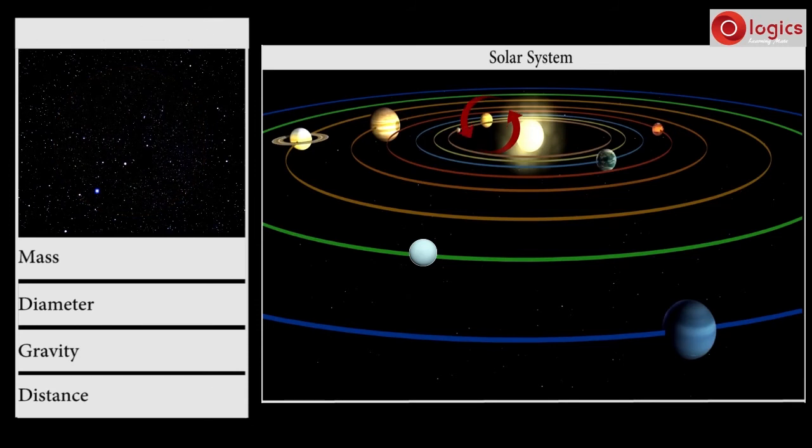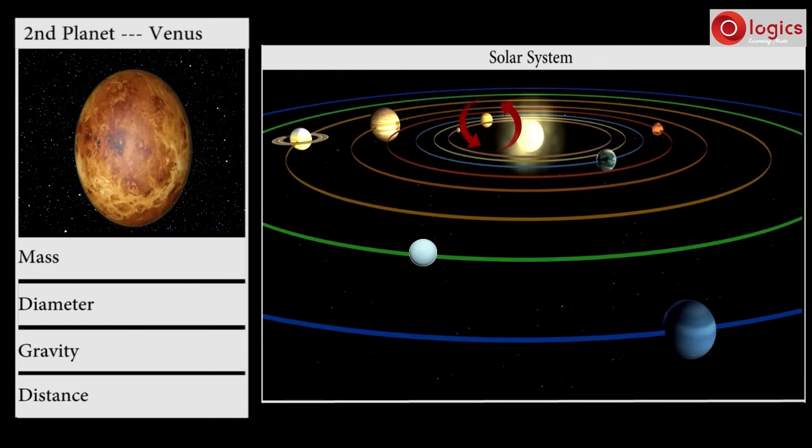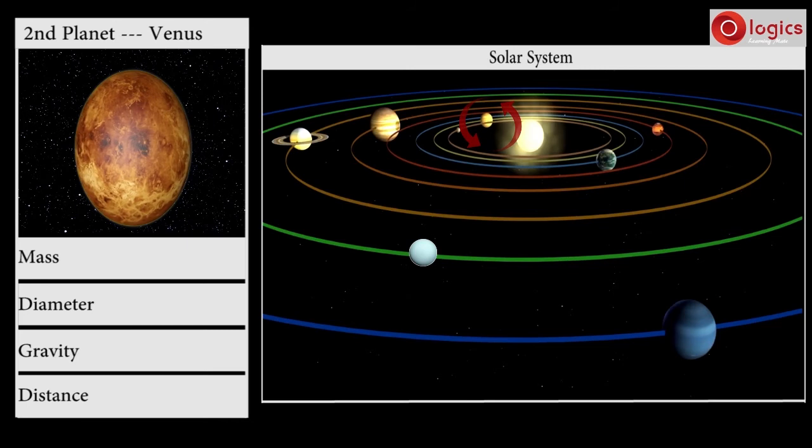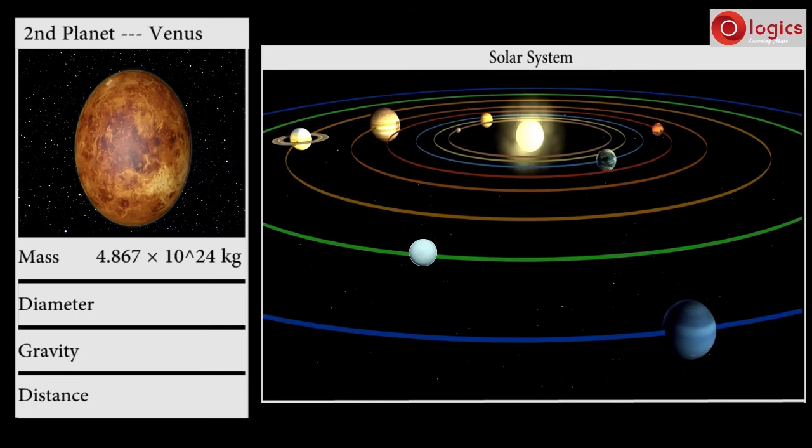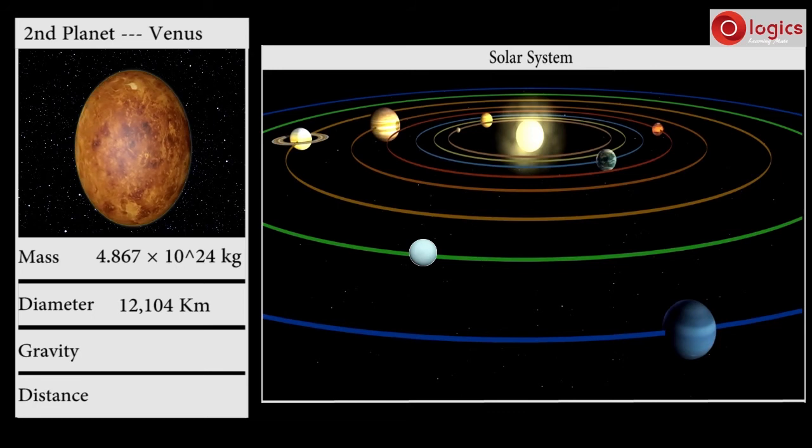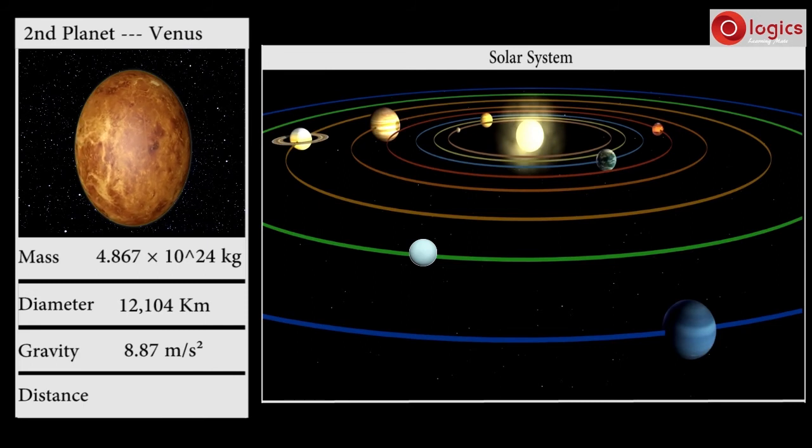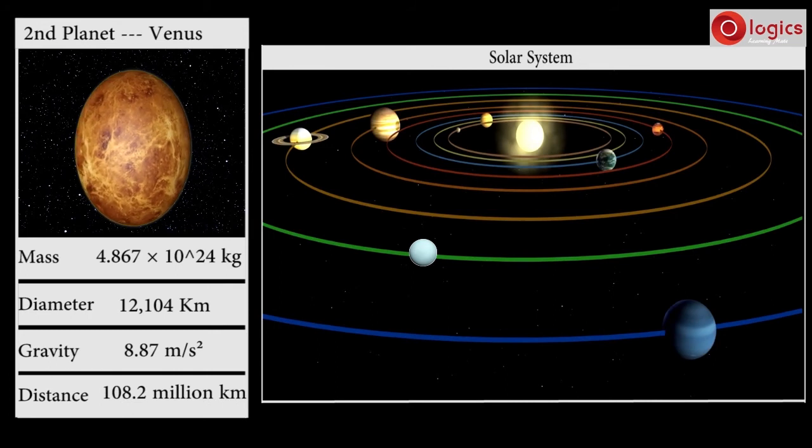The second planet in the solar system is Venus. Its mass is 4.867 × 10^24 kilograms. Its diameter is 12,104 kilometers. Gravity on Venus is 8.87 meters per second squared. Venus is 108.2 million kilometers distance from the Sun.